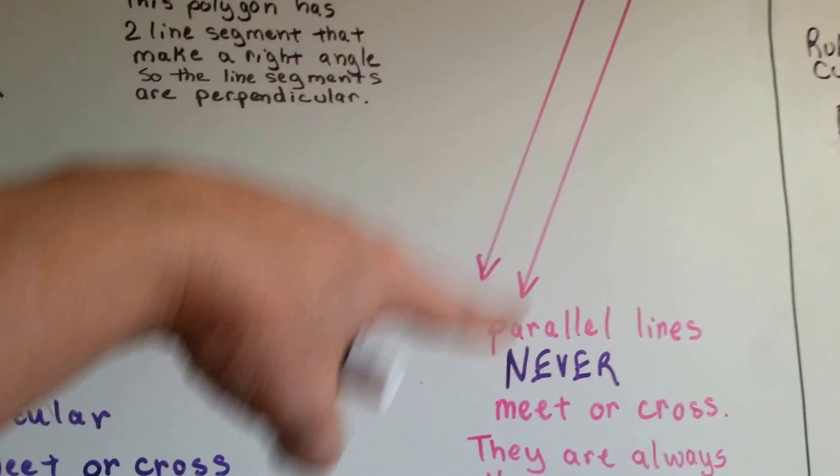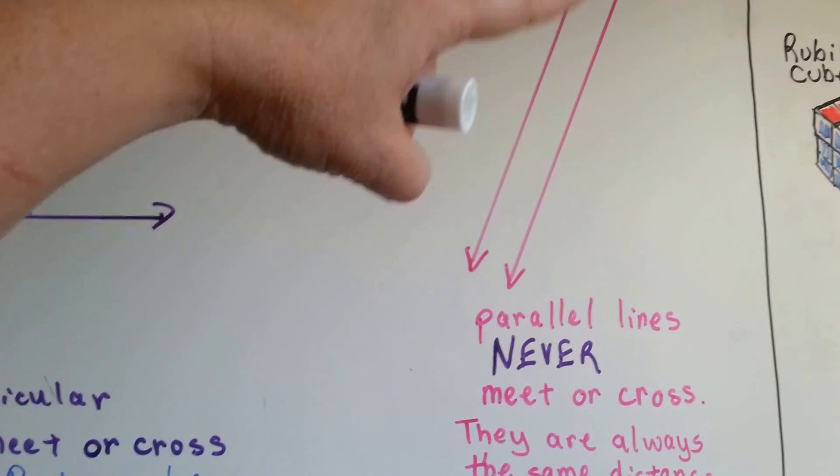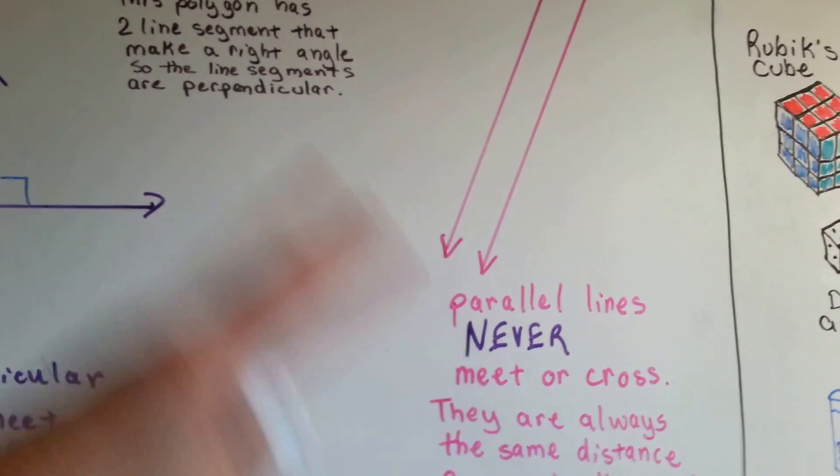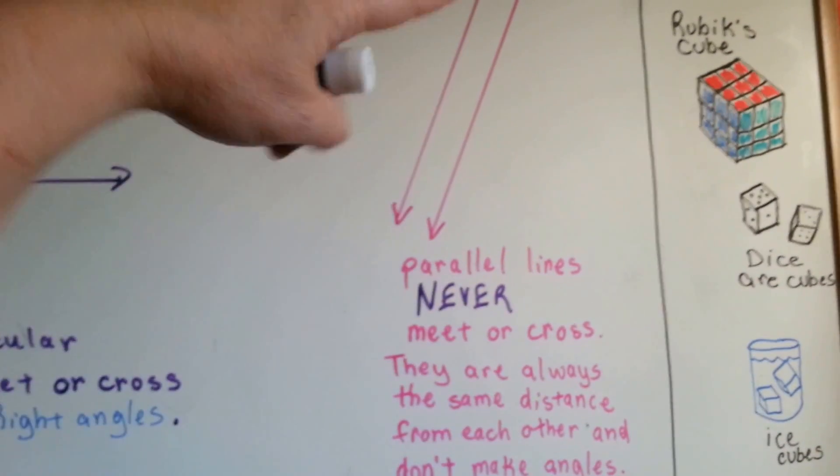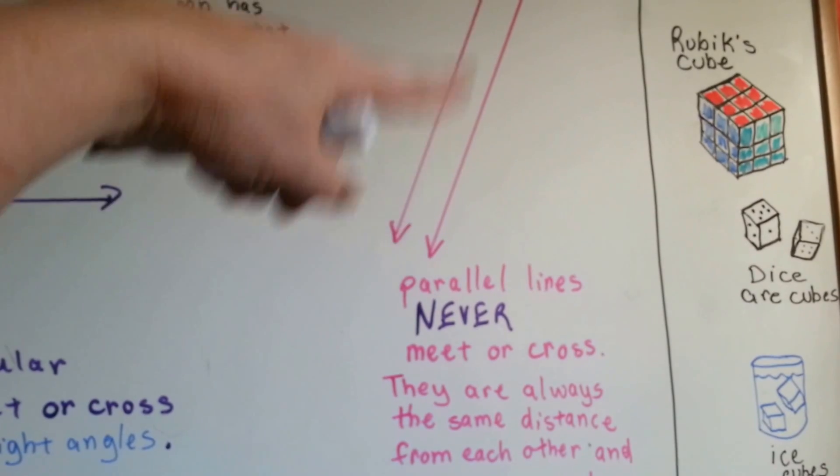These two lines are parallel lines. They never meet or cross. They're always the same distance from each other and don't make any angles. They go on like this forever.